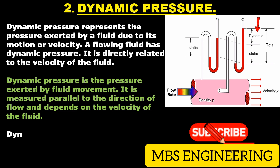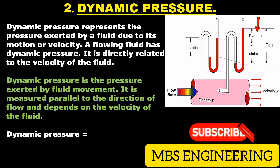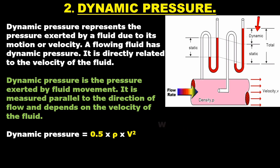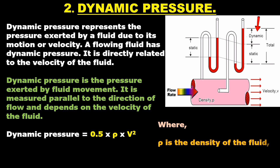Dynamic pressure equals 0.5 times rho times V squared, where rho is the density of the fluid and V is the velocity of the fluid.